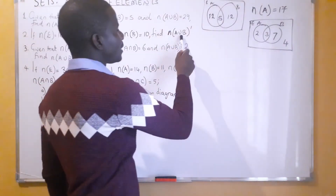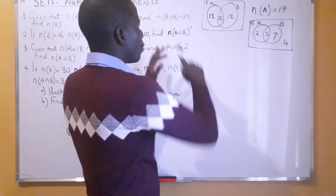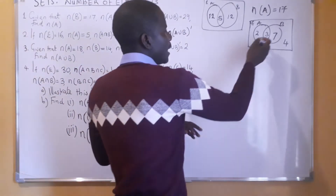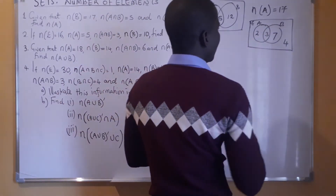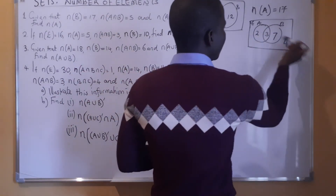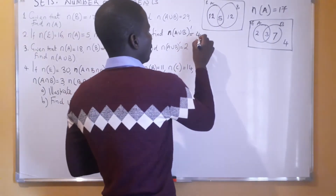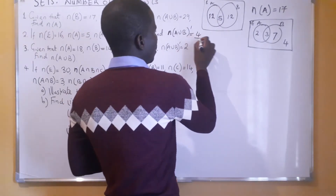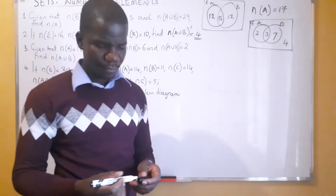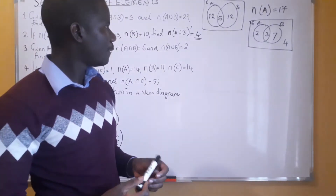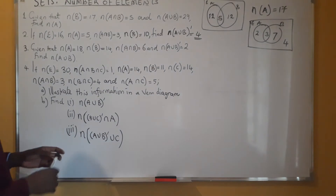The number of elements in A union B complement means those elements that are not part of these two sets, and those elements — it's this 4. That is for question 2.